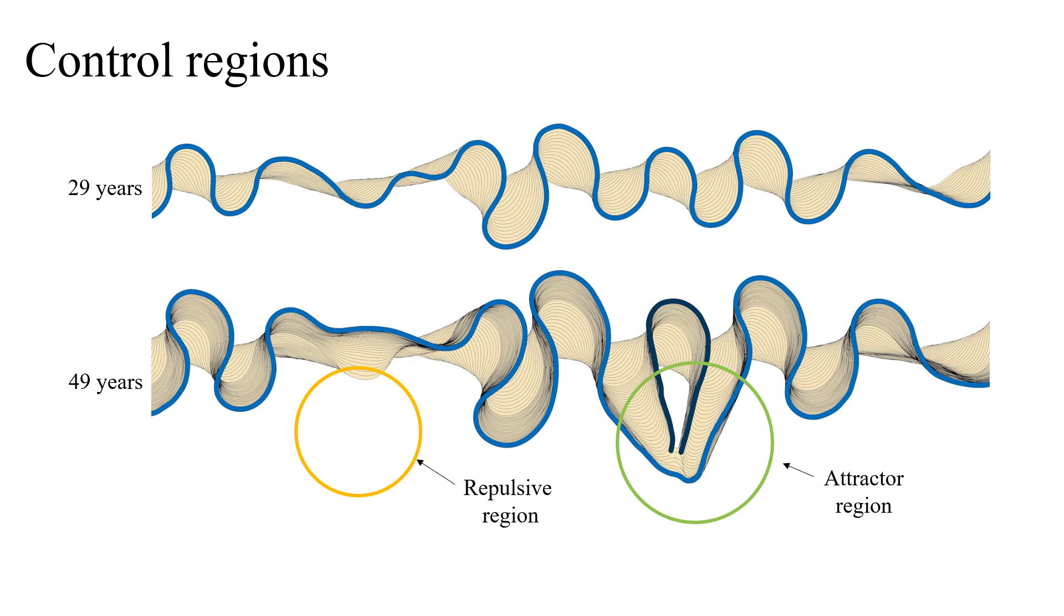We extend this physically-based migration model with authoring tools such as repulsive or attraction control regions. These controls directly influence the migration direction of the channels.